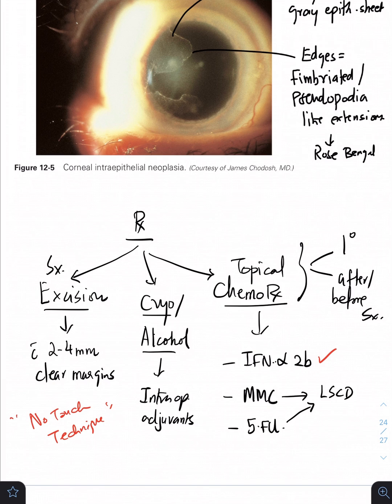Quickly go into the treatment aspect. You have three treatment options: one, you can give a surgical excision as the treatment of choice, and there are intraoperative adjuvants. Apart from excising, you can also give cryotherapy, you can give alcohol. These are intraoperative adjuvants.